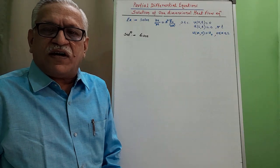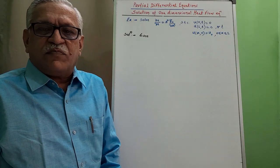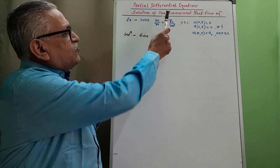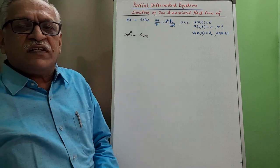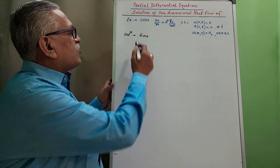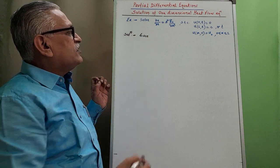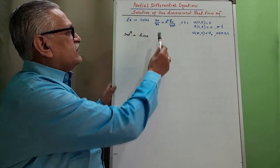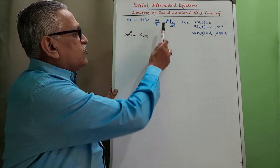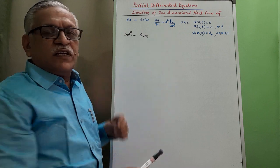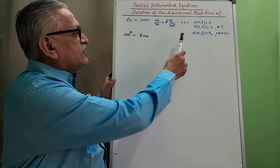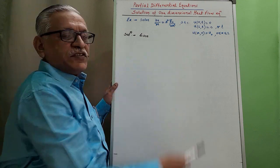Hello friends, myself Aradiyah Mahajan presenting my video on solution of one-dimensional heat flow equation. Let us solve the problem. Solve the partial differential equation: ∂u/∂t = a² · ∂²u/∂x², subject to conditions.